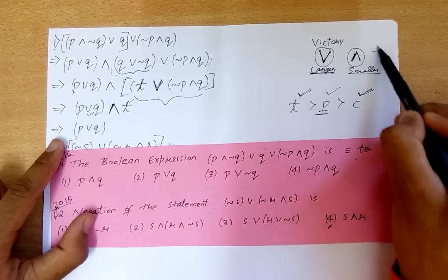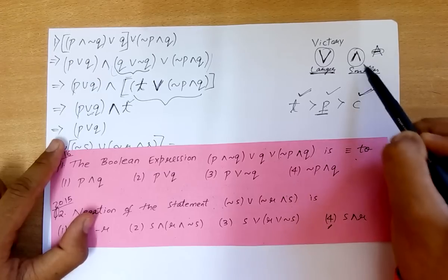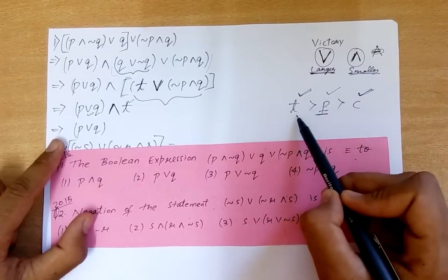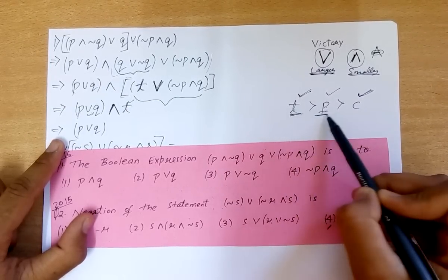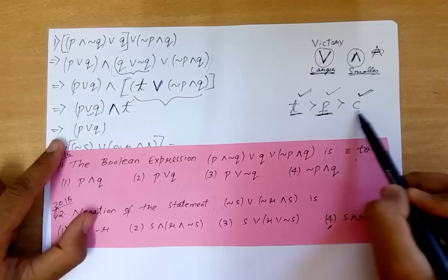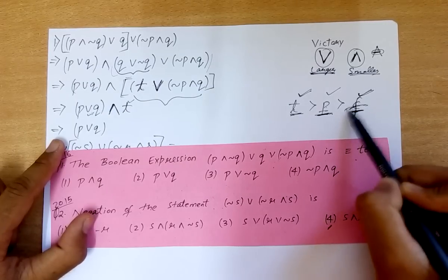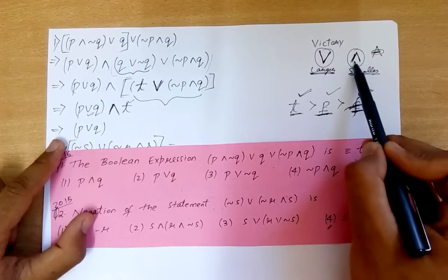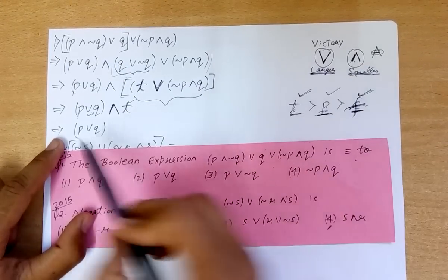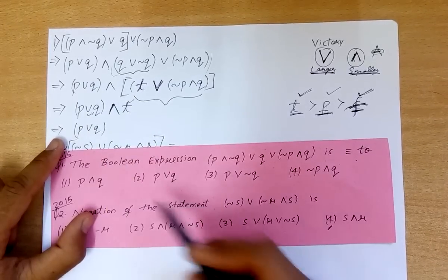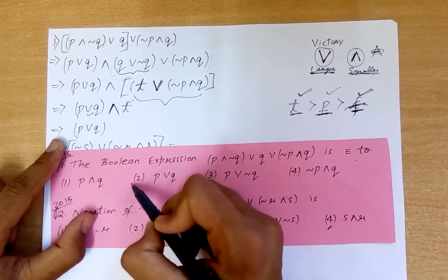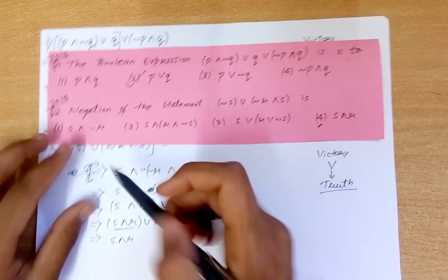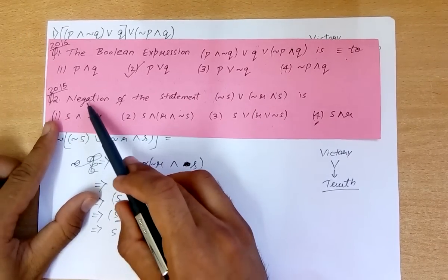Here we have the OR symbol, so we choose the larger set, which is T (always true). But applying this correctly, the result comes out to be P or Q. So the answer is P or Q.